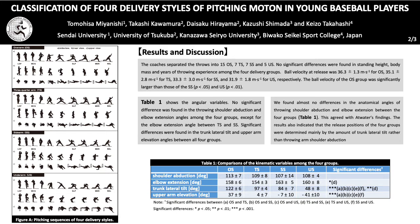However, there was almost no significant difference among the 4 groups in the anatomical throwing arm shoulder abduction and elbow extension angles. Therefore, the release positions were determined mainly by the amount of trunk lateral tilt rather than the throwing arm's shoulder abduction. This agreed with Atwater's findings.